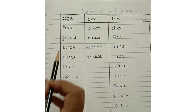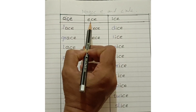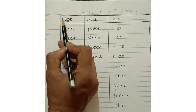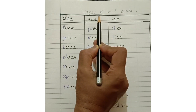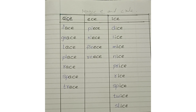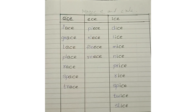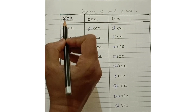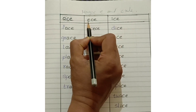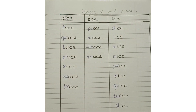Today's video is very informative. We are going to learn the words of ACE, ECE, and ICE. There are two rules: one is the magic E, and the other is the C rule. ACE makes the sound 'ace', ECE makes the sound 'eece', and ICE makes the sound 'ice'.